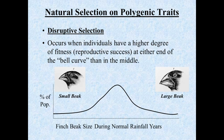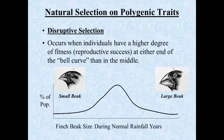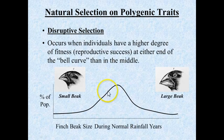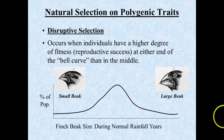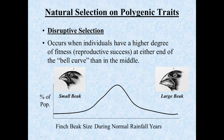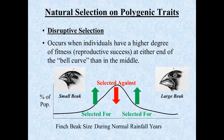One example of disruptive selection occurs with some types of finches in the Galapagos Islands. These are seed-eating birds. During normal rainfall years, several different types of plants produce lots of seeds, so it pays to be a generalist. Birds with a medium-sized beak have an advantage — they can handle both small and large seeds. With lots of seeds available, being a generalist means you can eat whatever's available.